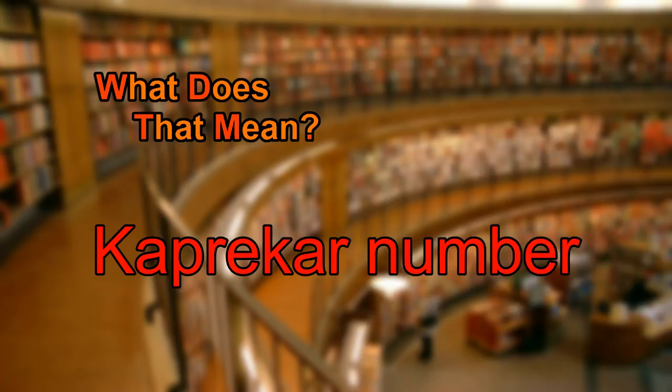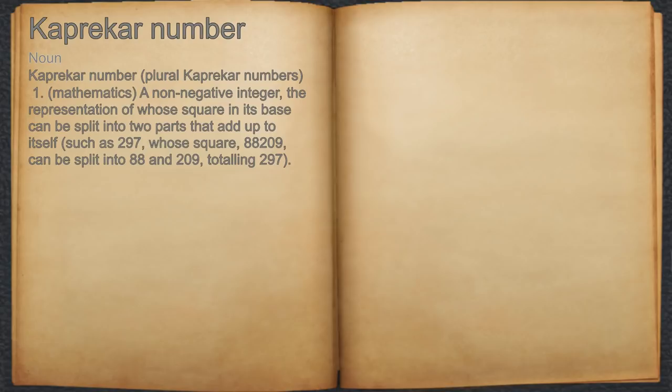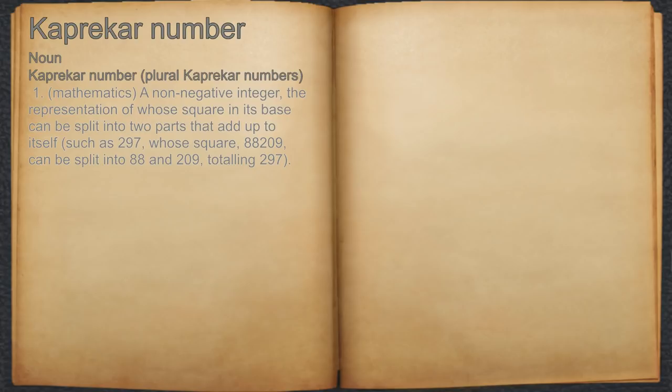Noun. 1. Mathematics: a non-negative integer the representation of whose square in its base can be split into two parts that add up to itself, such as 297, whose square, 88,209, can be split into 88 and 209, totaling 297.